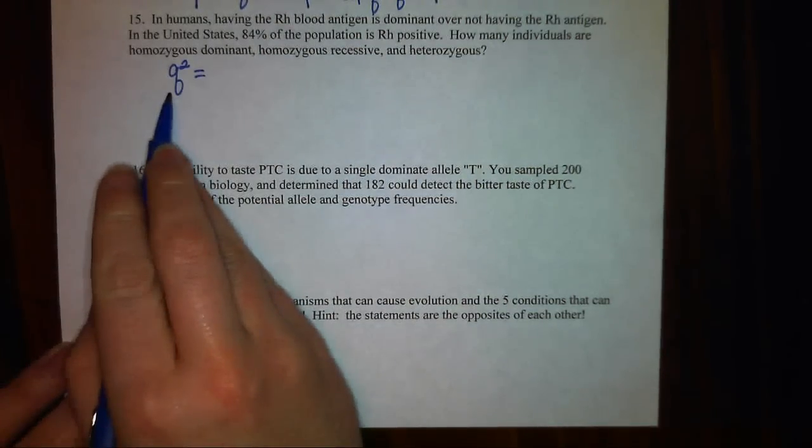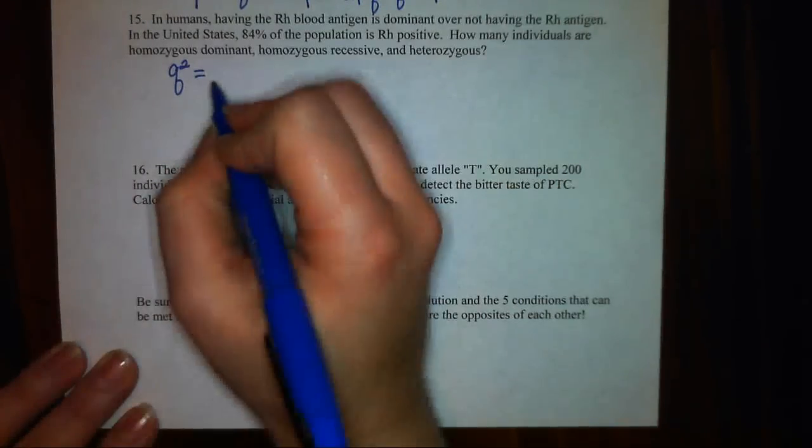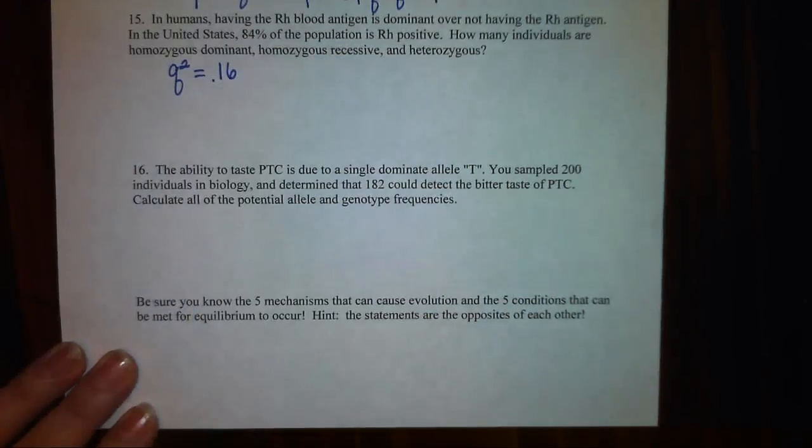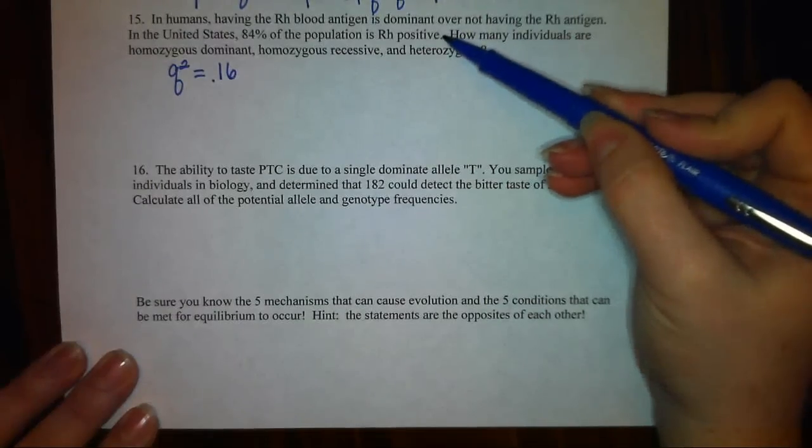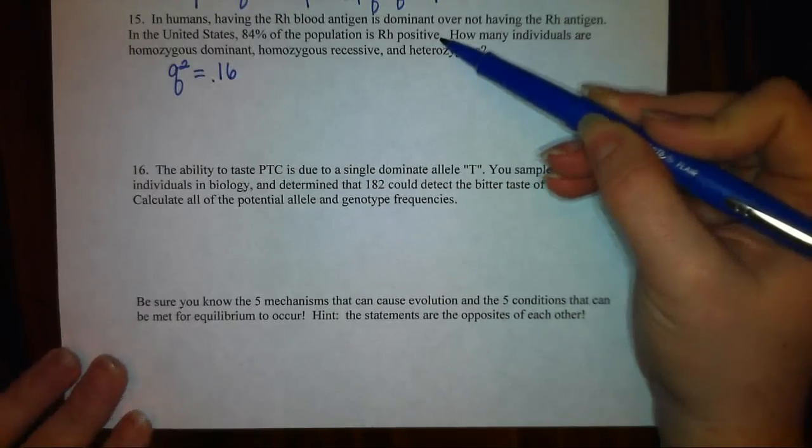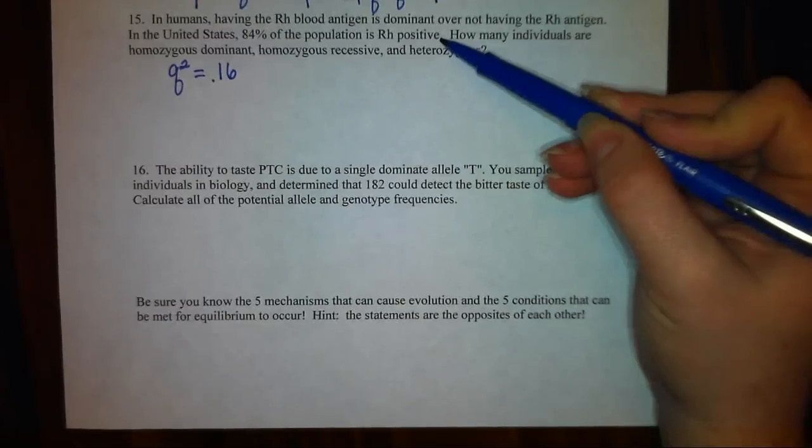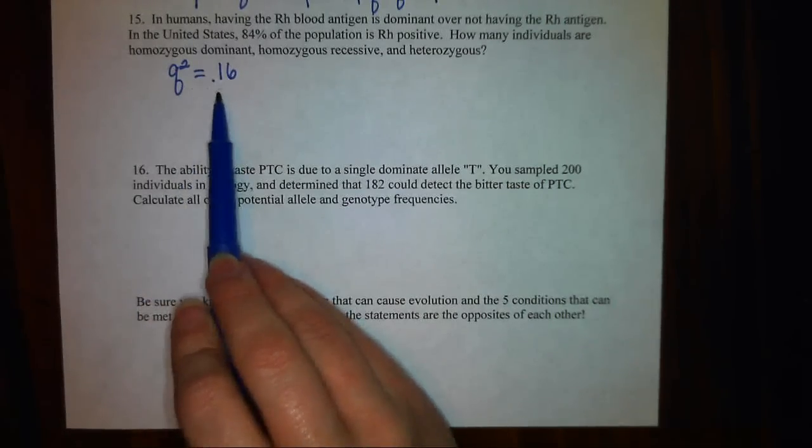Hopefully, you're coming up with a number of 16%. So 16% of the population is homozygous recessive. Homozygous recessive is represented by our Q squared term. So Q squared is going to equal 0.16. I can't start by working with the number 84%. I need to think what percentage is showing the recessive trait, which is 16%. So Q squared, the portion of the population that's homozygous recessive, is 0.16.